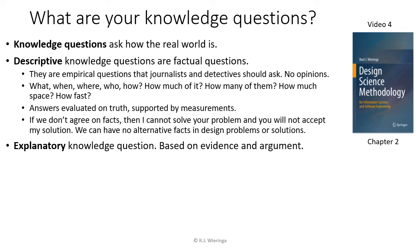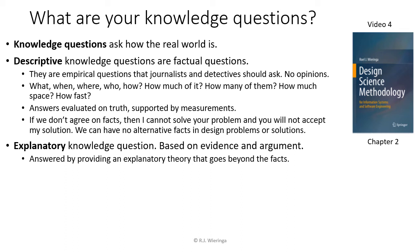The second type is the explanatory knowledge question. The answers should also be based on evidence and argument, but now we go beyond the facts — we give an explanation of why something happened. Often there can be more than one explanation, so we order them by plausibility and support them with evidence and argument. You do this all the time when debugging software: when it crashes, the first thing you figure out is the facts of the case — for which inputs does it crash, and is that repeatable? In doing so, you are answering a descriptive knowledge question: what's happening?